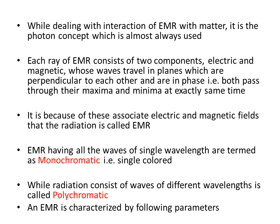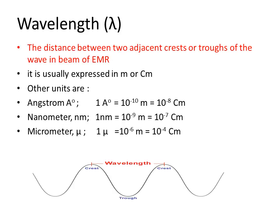There are different types of electromagnetic radiations, and they are characterized using different parameters. Number one is wavelength (λ). Looking at a wave, the distance between two adjacent crests or troughs is called the wavelength. It varies with different electromagnetic radiations and is expressed in meters or centimeters. Other units include the angstrom: one angstrom equals 10⁻¹⁰ meters, one nanometer equals 10⁻⁹ meters, and another unit is the micrometer.